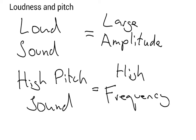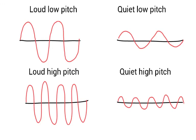I've drawn some examples of different pitches and loudnesses. Here we've got a loud low pitch—the low pitch means the wavelength is very large with low frequency. Here we've got a quiet low pitch—because it's quiet, the amplitude is much smaller, but it's still got roughly the same wavelength, so it's still low frequency.